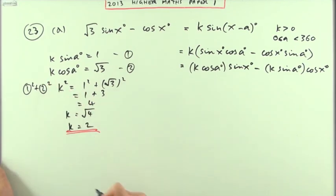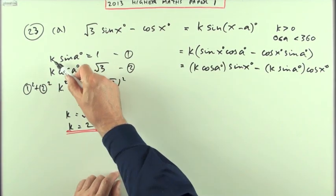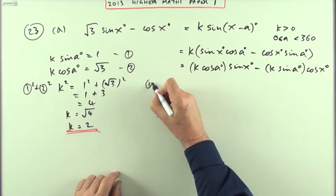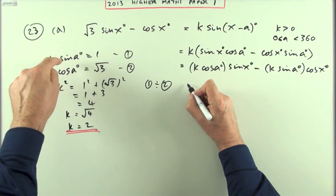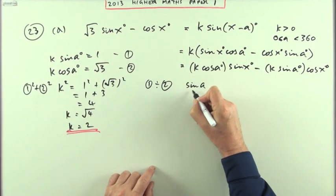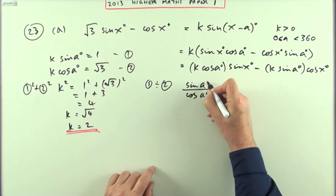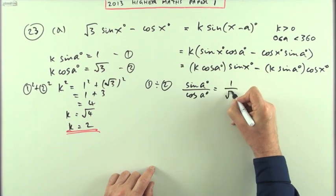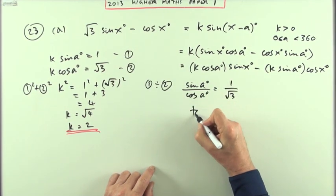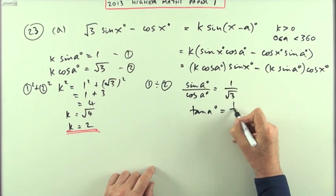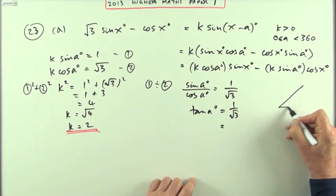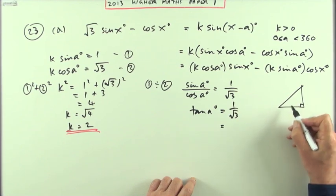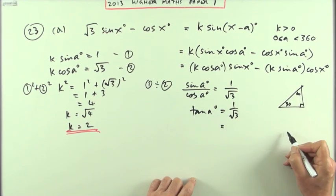The way you can get rid of the k is by dividing these equations. So if I do 1 divided by 2, the k's will cancel out and I'll be left with sine a over cos a. Sine a over cos a will be 1 over root 3, that's the same as the tan of a. The tangent of a will be 1 upon root 3, that's one of the ones you should know.